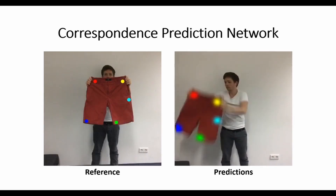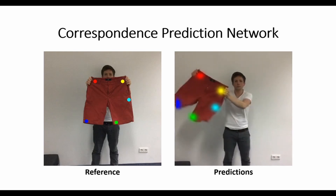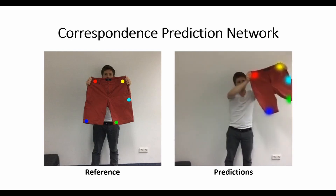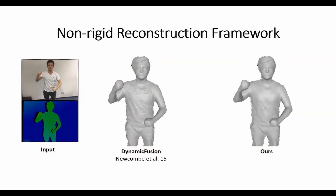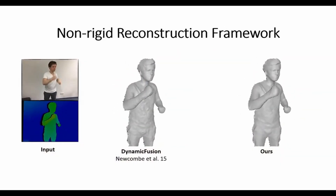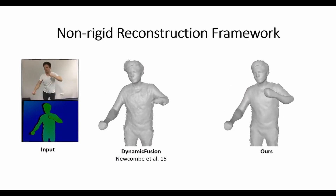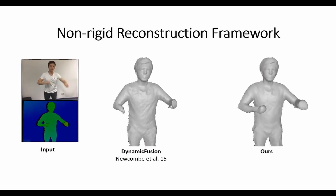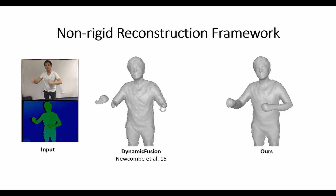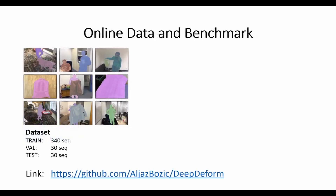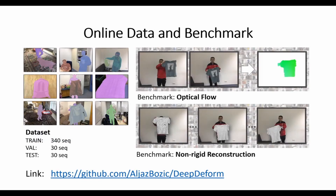Network predictions are reliable for a large variety of non-rigid object classes. Using the learned correspondences, we achieve state-of-the-art non-rigid reconstruction results, with better tracking of fast motion and robust relocalization. The dataset is publicly available. We also provide online benchmarks for quantitative evaluation of non-rigid reconstruction and optical flow methods.